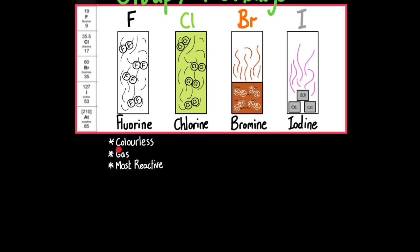Firstly, fluorine is a colorless gas. It is the most reactive halogen. Chlorine is a pale yellow green gas. It's very toxic. It's also highly reactive, but not as reactive as fluorine.